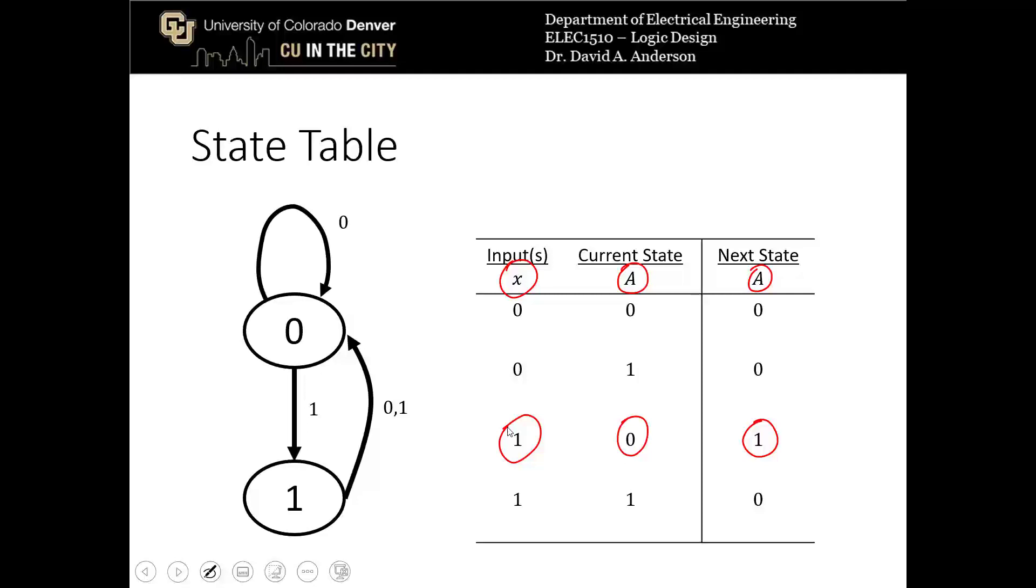That means that if we call the next state q of t plus 1 and the current state is q of t, if we think of it that way, then q of t plus 1 would be equal to x and q prime of t.